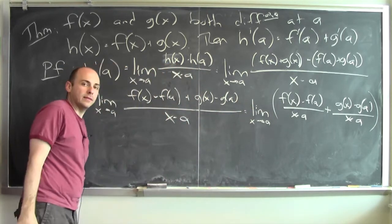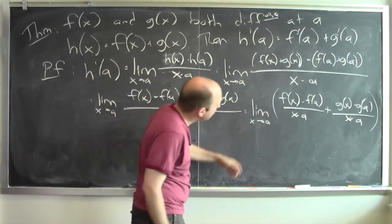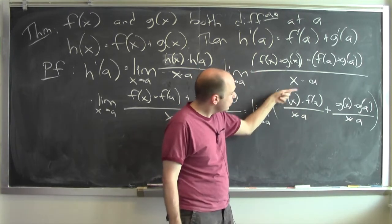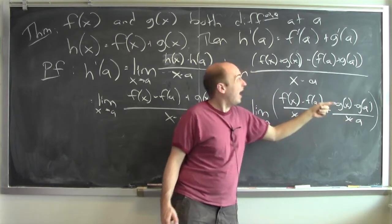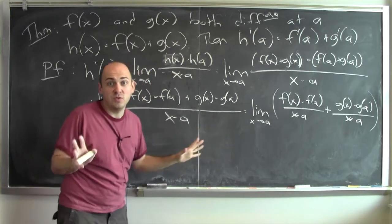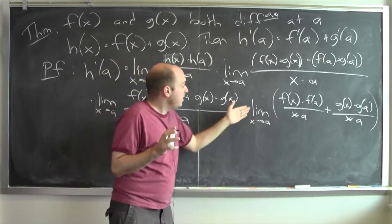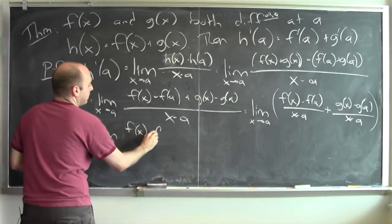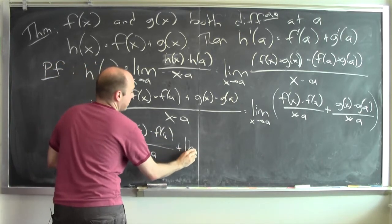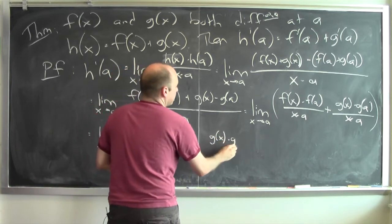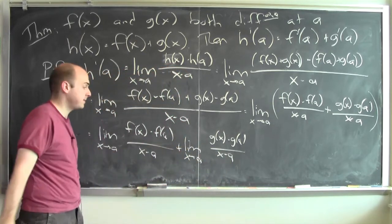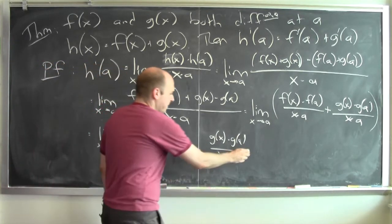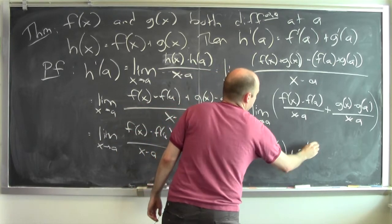How do I calculate that limit? I'm just applying the rules for calculating limits. One of the rules is that the limit of the sum is the sum of the limits, provided the limits exist. This first limit is really the derivative of f at a, and this second limit is really the derivative of g at a. I assumed that f and g are both differentiable at a, so those limits do exist. So this equals the limit as x goes to a of f of x minus f of a over x minus a, plus the limit as x goes to a of g of x minus g of a over x minus a — which is f prime of a plus g prime of a.